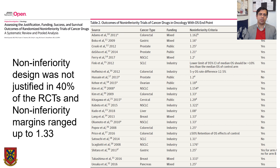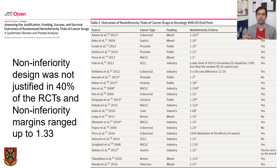The other issue to keep in mind is non-inferiority design. We see an increasing number of non-inferiority design trials in oncology, but the first question is: are they justified? Non-inferiority design is justified only if the newer agent is cheaper — which never happens in oncology — or provides some quality of life benefit, or has some ease of administration advantage. Yet we found that in recent oncology RCTs, in 40% of cases the non-inferiority design was not justified. Additionally, non-inferiority margins ranged up to 1.33, meaning up to a 33% increase in the hazard of death was considered acceptable — but who decides that?